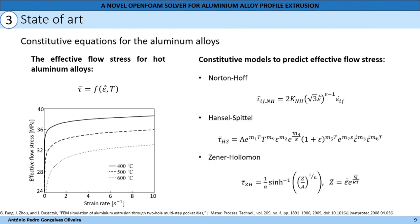There are some constitutive models present in the literature that intend to describe the aluminum alloys' dependence on temperature and effective strain rate. They are the Norton-Hoff, the Hansel-Spittel, and Zener-Hollomon. The model that will be used during this work is Zener-Hollomon, because it is the method that best describes aluminum alloys at high temperatures and is the most used method in the literature.